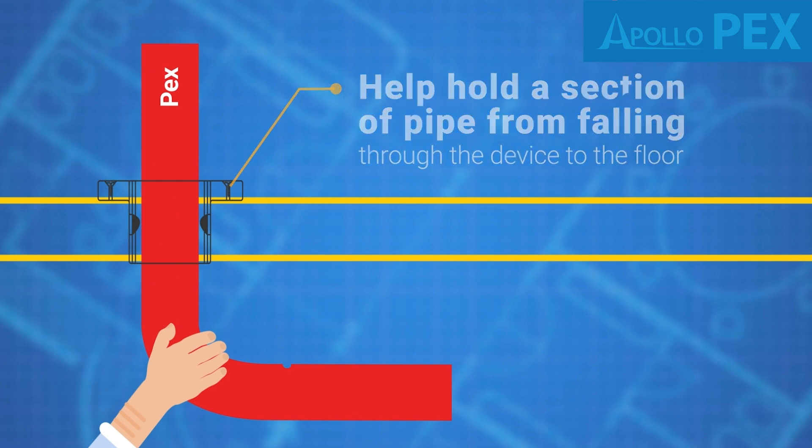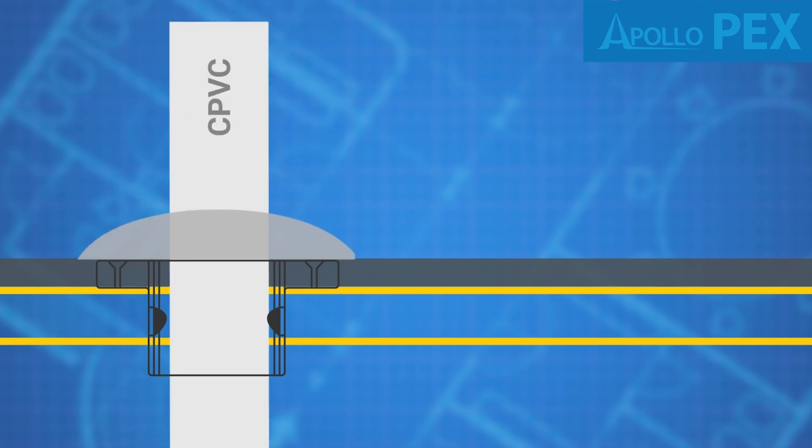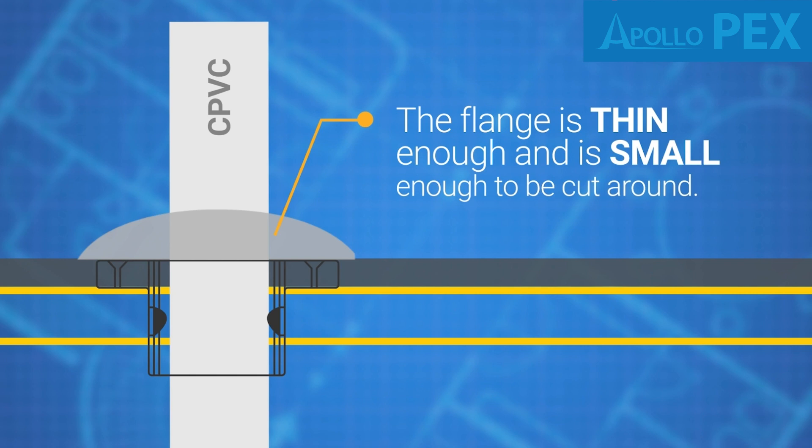Additionally, the flange is thin enough to be tiled over when flooring companies are using concrete board or underlayment and is small enough to be cut around and still have the hole covered by a pipe escutcheon.